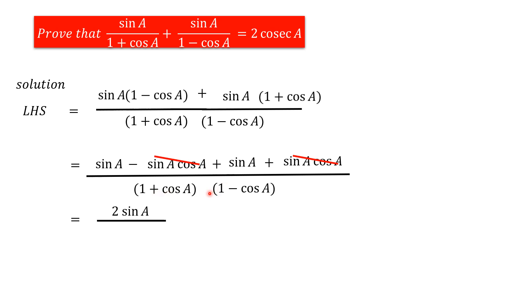On the denominator, it has 1 plus cos A into 1 minus cos A. So, it can be written as 1 square minus cos square A. Like a plus b into a minus b equals a square minus b square. The resultant value of this one is 1 minus cos square A because 1 square value is 1.